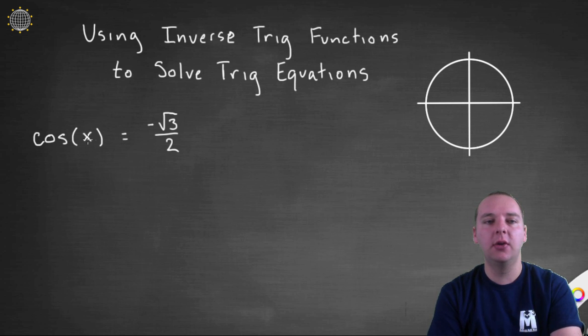Let's start with a simpler example and then I'll show you what I'm getting at. Let's say we have the equation cosine x equals negative root 3 over 2. We know that what this is asking is what angle, if you took cosine of it, would give you negative root 3 over 2.